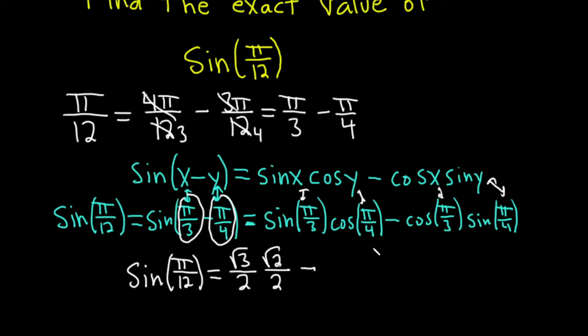Minus cosine of pi over 3. It's going to be 1 half. And then sine of pi over 4 is square root of 2 over 2.